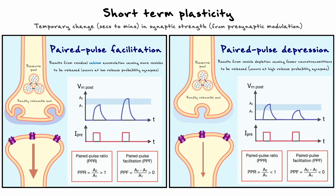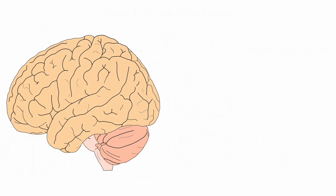Now that we understand a bit more how plasticity occurs in the short term, let's explore the long-term aspect. To do so, we will consider an important area in the brain named the hippocampus, that has been instrumental in the discovery and the development of synaptic plasticity.